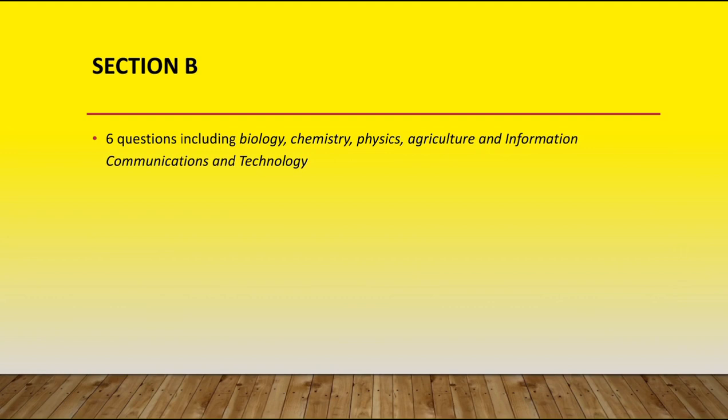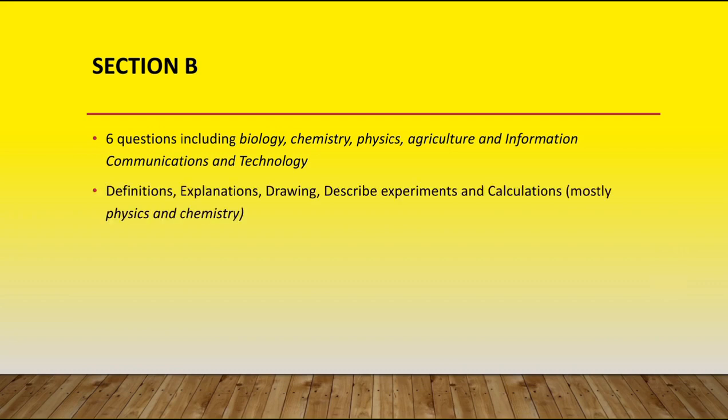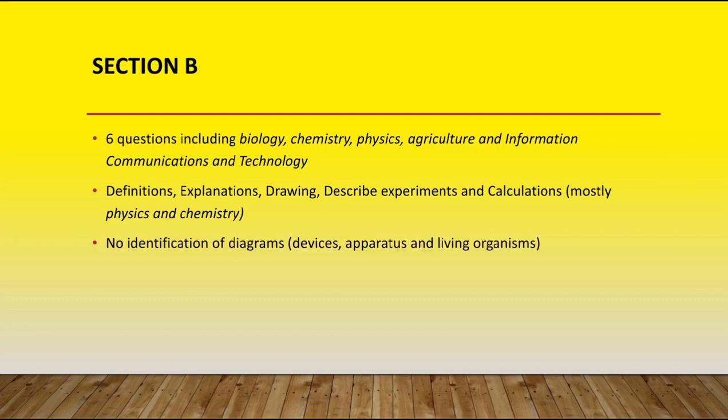With section B, the questions include biology, chemistry, agriculture, and information and communications technology as well. The number of questions on ICT is reduced — it's the least. In section B, sometimes you are asked to define, explain, draw, describe an experiment, and there are calculations as well, mostly in physics and chemistry. In section B, you are not asked to identify any diagrams, devices, or apparatus — that is mostly reserved for the practicals.